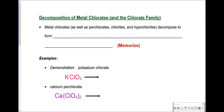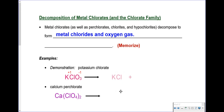Metal chlorates — and the whole chlorate family, including metal perchlorates, metal chlorites, and metal hypochlorites — all decompose to form metal chlorides and oxygen gas. For example, potassium chlorate, KClO3: potassium is +1, chlorate is -1. It's going to make KCl — a metal chloride, +1 and -1, no subscripts needed — and give off O2. Do not write O3; oxygen is a diatomic when by itself.